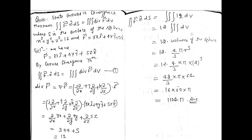Substituting r = 4, the final answer is 1024π. If you are getting dx dy dz, you can write directly the volume of the given surface. So you can write the volume of that surface directly.